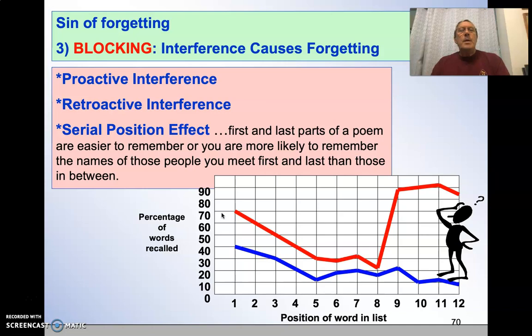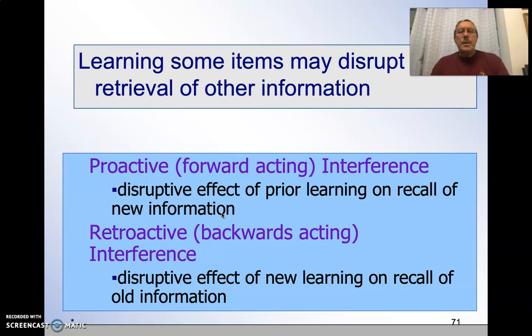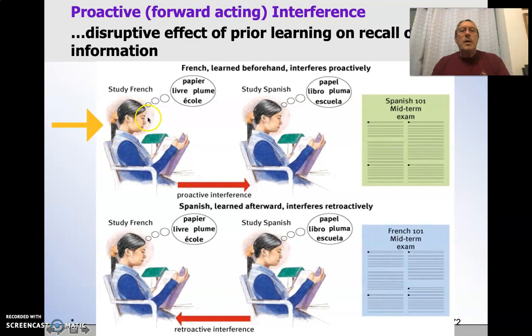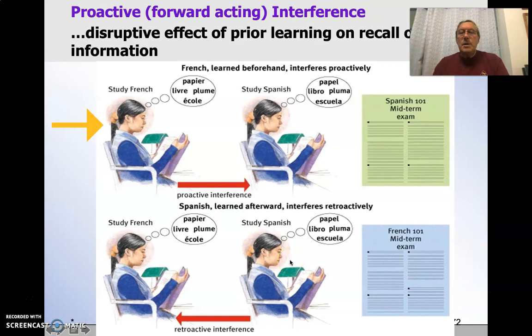Thirdly is what's called blocking. Sometimes we interfere with our own memory. It could be proactive, it could be retroactive, or it could just be the serial position effect. For instance, suppose I'm studying French, and then I go to study Spanish. Well, the French, which you learned beforehand, is going to interfere proactively — or forwardly — with studying Spanish. Conversely, your study of French is going to be impacted in the future by the study of Spanish. They're going to interfere with each other proactively and retroactively.